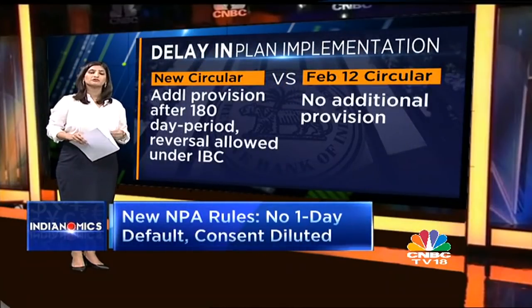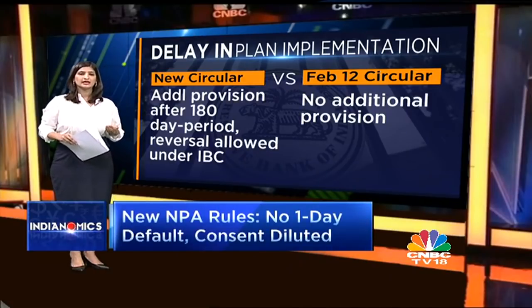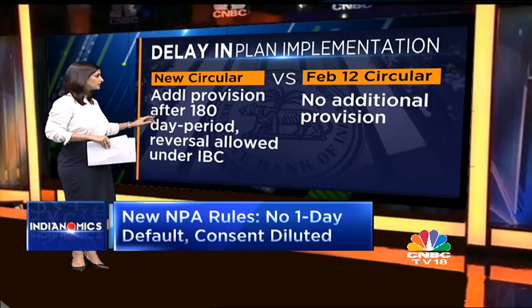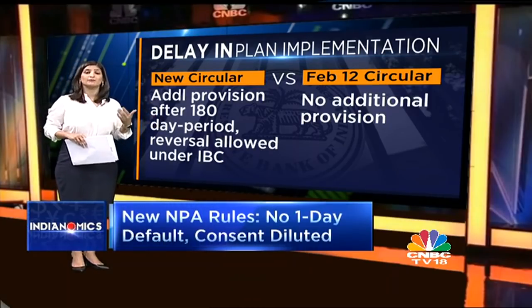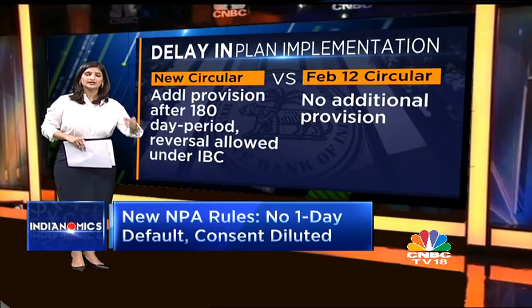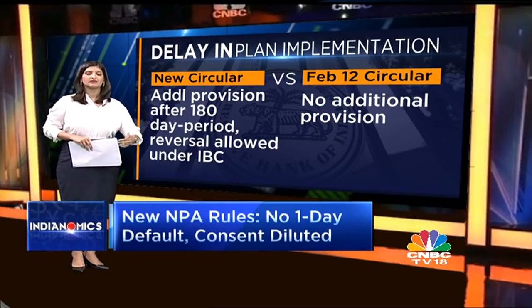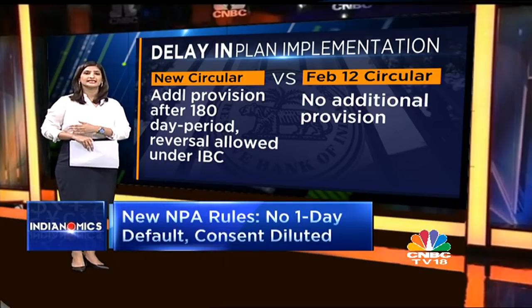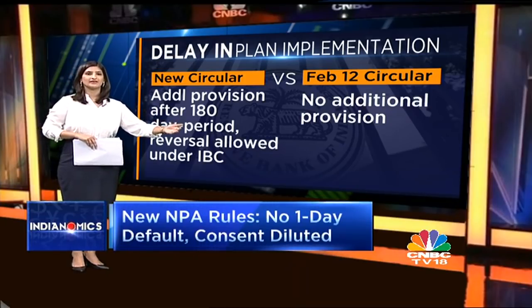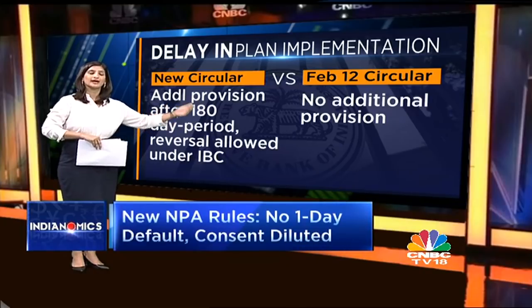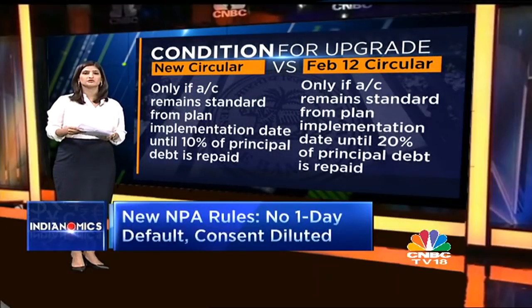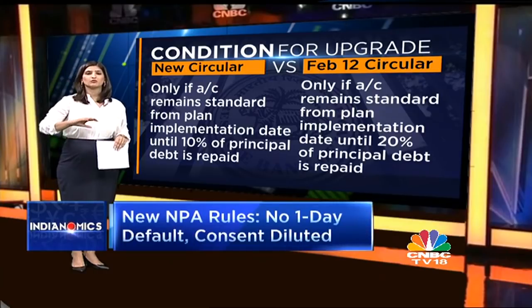Another big change is a punitive measure in the form of additional provisioning. Without the IBC and the fear of a company going to the NCLT, the RBI has tried to incentivize banks to speed up resolution by saying that if resolution is delayed beyond 180 days there will be additional provisioning of 20%, and if delayed further beyond 365 days, that goes up by another 15% to 35%, over and above the IRAC norms of 15% for NPA provisioning.